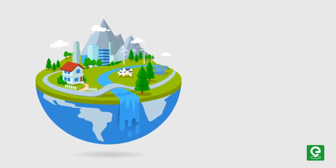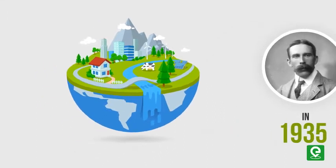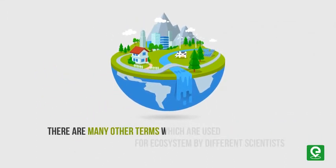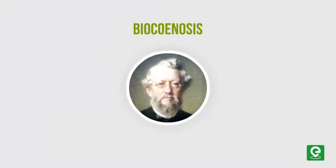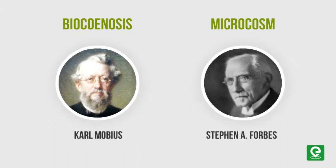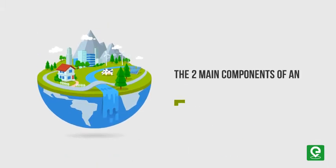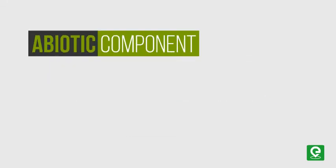The term ecosystem was given by A.G. Tansley in 1935. Besides this, there are many other terms used for the ecosystem by different scientists, such as biocenosis, which was coined by Carl Mobius, and the term microcosm, which was proposed by Stephen A. Forbes.